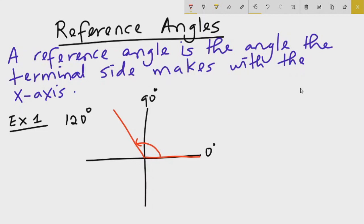To find the reference angle for 120 degrees, we want to find the angle that the terminal side—the side where the drawing ends—makes with the x-axis. We want to find this angle theta. So theta is 180 minus 120, which gives us 60 degrees. The reference angle is 60 degrees.